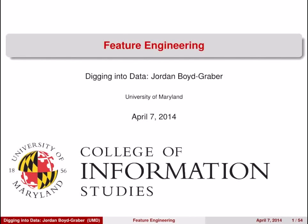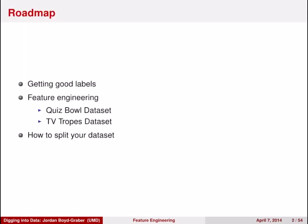Today we're going to be bringing together a lot of the concepts we've talked about into one continuous narrative. We're going to start from a data set that has absolutely no labels and talk about the process where you gather labels. Then once you have some labels, you need to learn how to create features for a classification algorithm to go from unannotated data to annotated data in a fully automatic way. I'll talk about two examples: one on a data set called QuizBull and another called TVTropes.